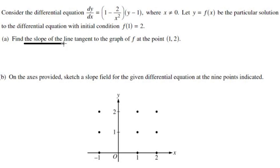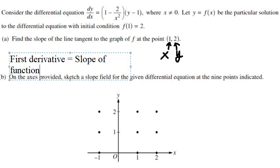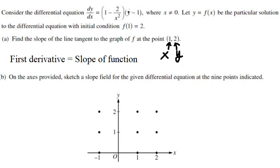We want to find the slope of the line tangent. This axis is about x and this one is about y. We know that dy over dx is about the derivative and this is the slope of the function. So they want to find the value of the slope. We just put x equals to 1 here and y equals to 2 here, and we will have negative 1 — that is the final answer.